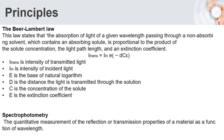The factors are: solute concentration (in our situation, blood), the light path length, and the extinction coefficient. The equation is: I_trans = I_in × e^(−DCη), where I_trans is the intensity of transmitted light, I_in is the intensity of incident light, e is the base of natural logarithm, D is the distance light travels through the medium, C is the concentration of the solute, and η is the extinction coefficient. The second principle applied in pulse oximetry is spectrophotometry.